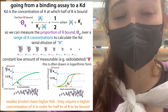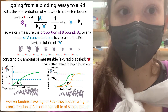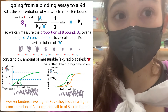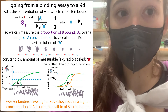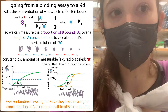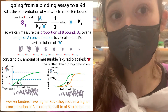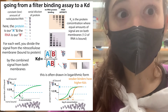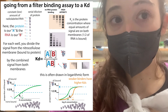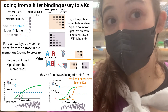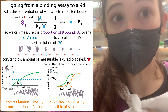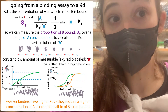The Kd, or dissociation constant, is a measure of binding affinity. It's equal to the concentration of one binding partner that's required for half of the other binding partner to be bound. But why? Where does this come from? Why should we care? And how can we determine the Kd from binding experiments?